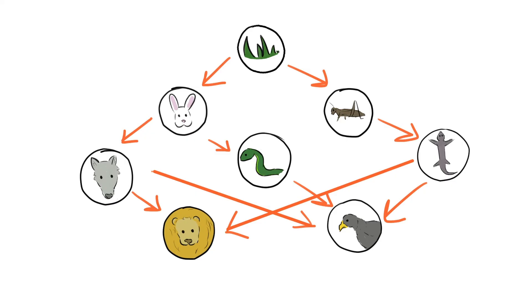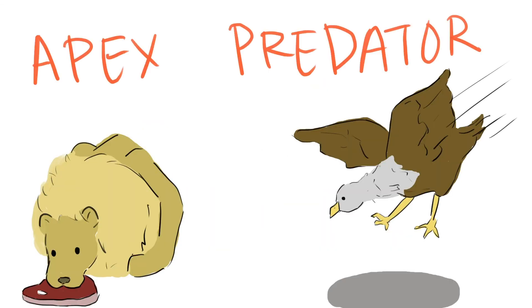In this food web, there are two special organisms at the very top, the lion and the hawk. These two organisms are the top predators of the food web, so they are also known as apex predators.